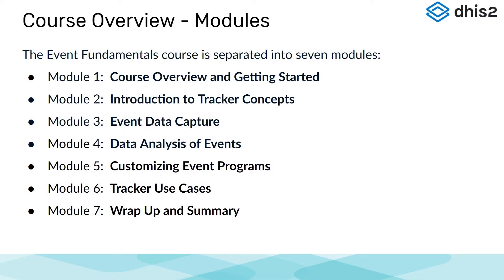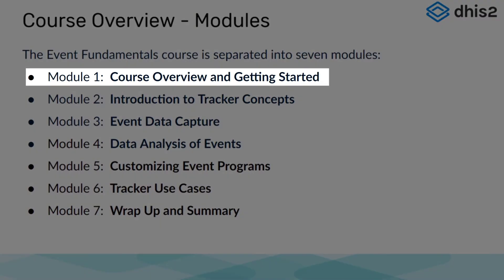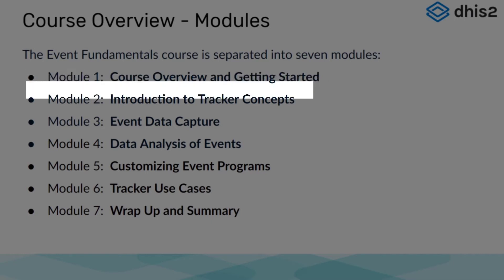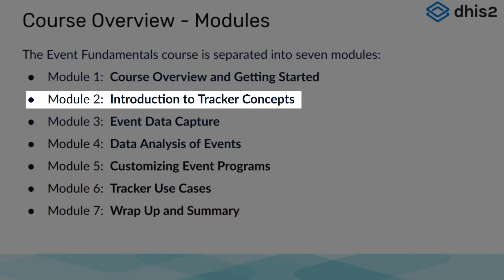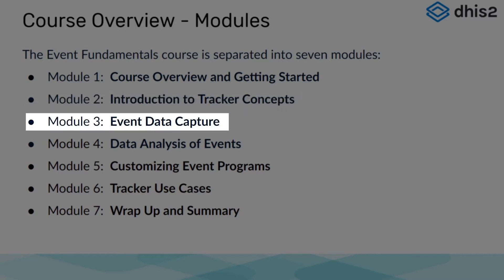The Event Fundamentals Online Academy consists of seven modules. Module 1 is an overview of the course and will give you information on how to get started, log in to our DHIS2 systems, and introduce yourself to other course participants. Module 2 is an introduction to event and tracker program concepts. Module 3 reviews how we can collect event program data, both on the web as well as using Android devices.